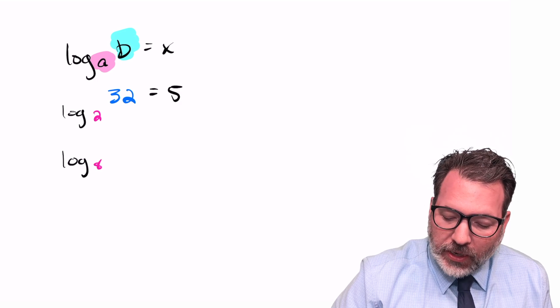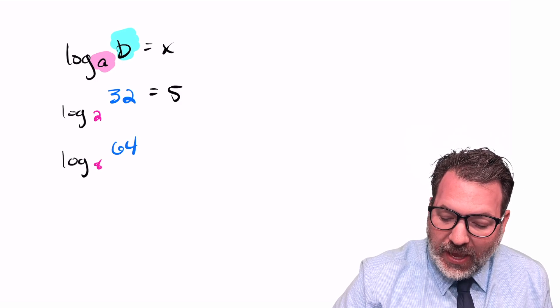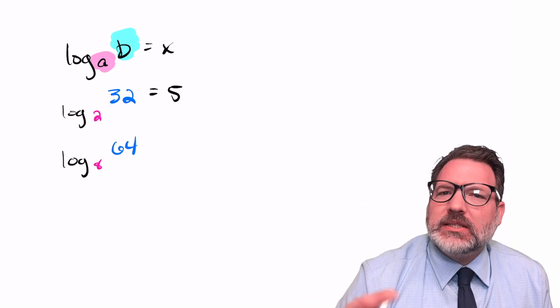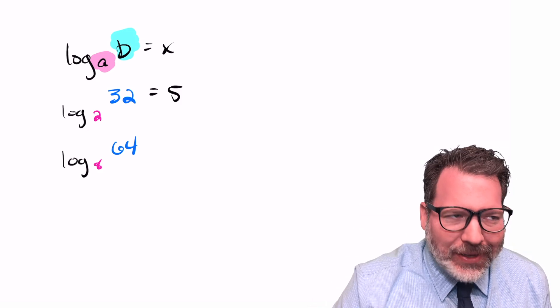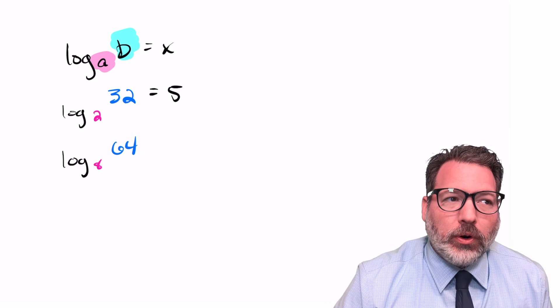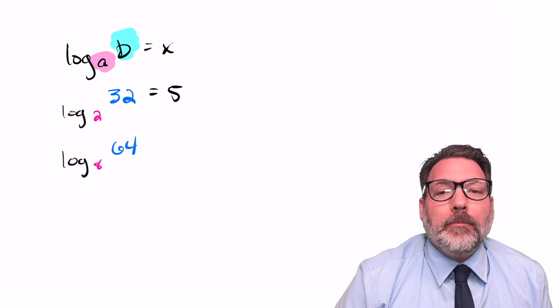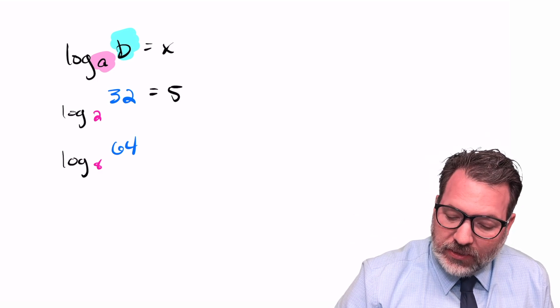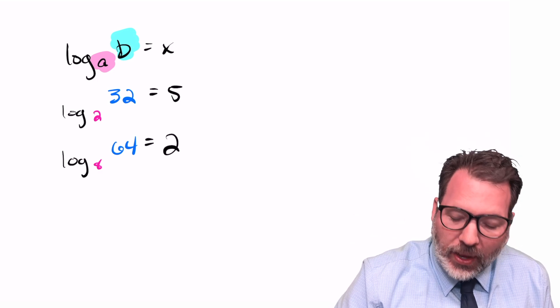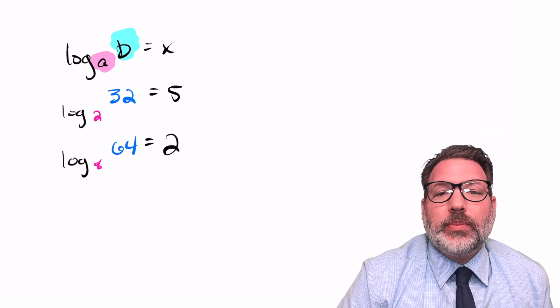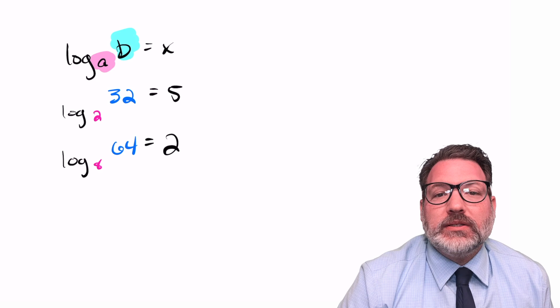Similarly, imagine that I wanted to take the log base 8 of 64. I'm asking how many times does the 8 go into 64? But not in the sense of how many 8s do I need to add together to make 64, but how many 8s do I need to multiply together to make 64? 8 times 8 makes 64, and so it took 2 eights multiplied together to make that 64, and therefore log base 8 of 64 is 2.